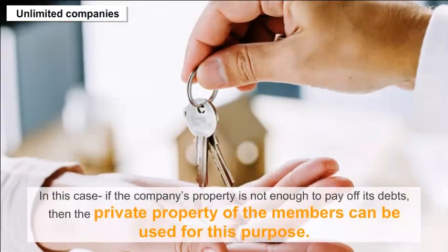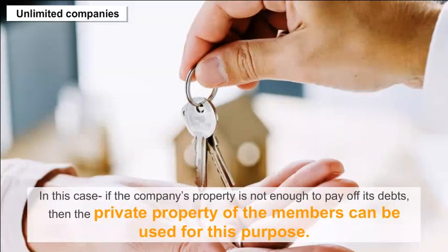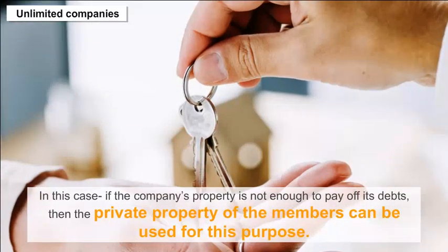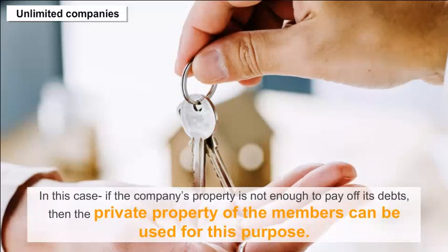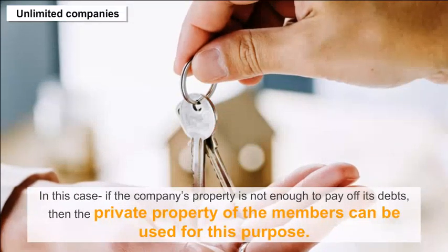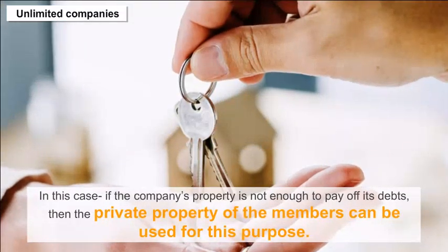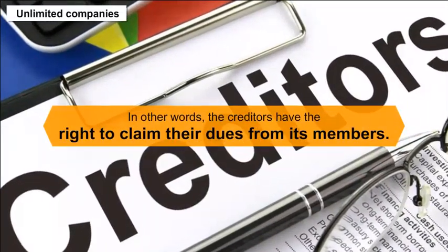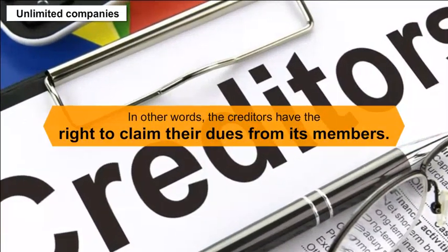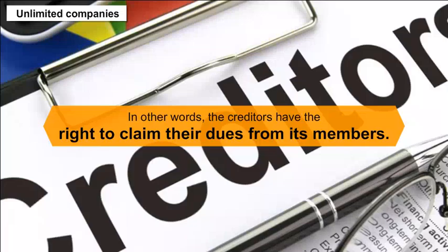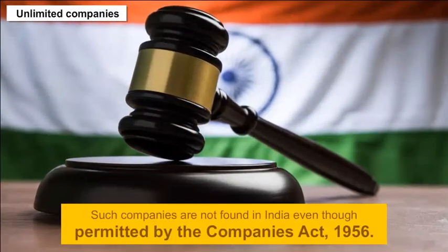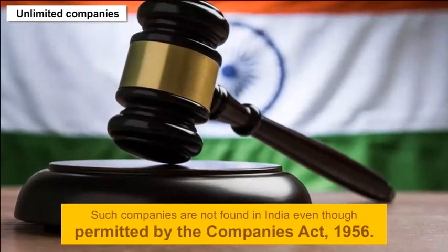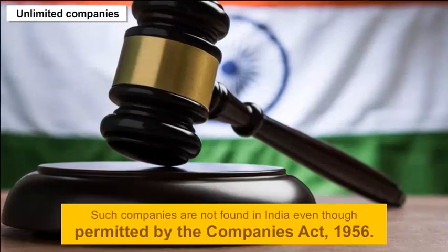In an unlimited company, if the company's property is not enough to pay off its debts, then the private property of the members can be used for this purpose. In other words, the creditors have the right to claim their dues from its members. Such companies are not commonly found in India, even though permitted by the Companies Act 1956.